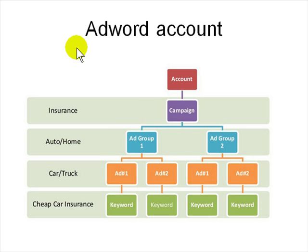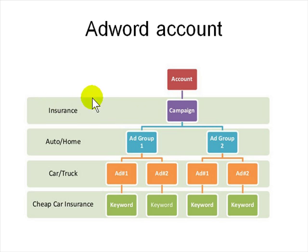To set up an AdWords account as an advertiser, you log in with Gmail, create an account, then log into Google AdWords. You put money into your account, enter your website, and say you want to advertise on Google. In marketing, the first thing you need to do is create a campaign — defining what you are trying to sell. Then you create ad groups to define the types of people you are targeting.